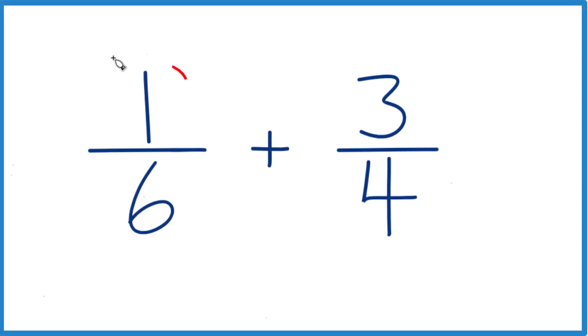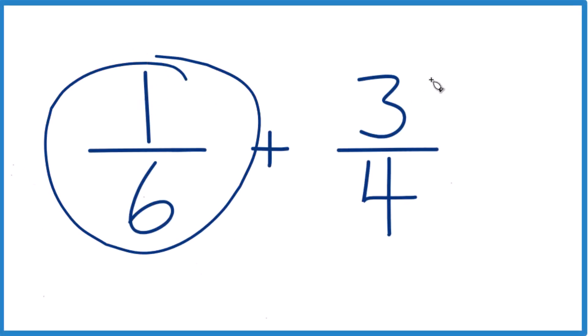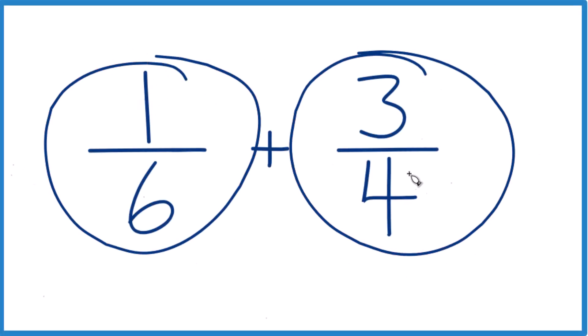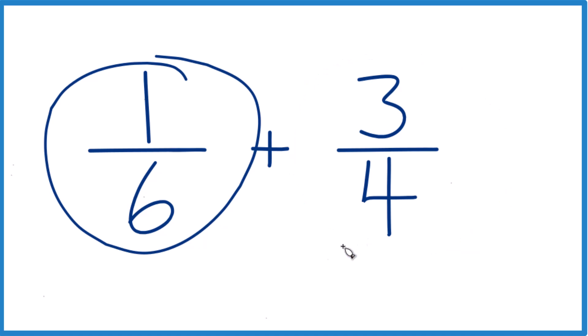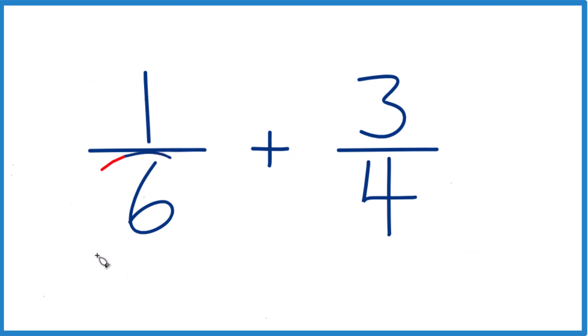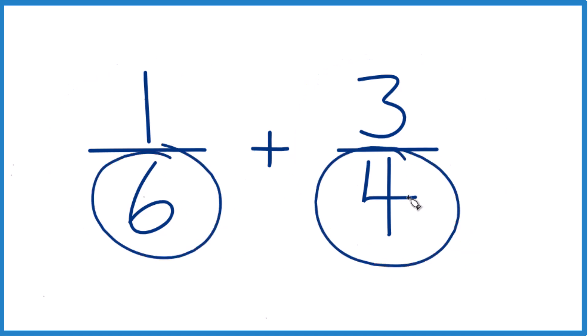If you need to add the fractions 1/6 plus 4/3rds, here's how you do it. What we want to do is get a common denominator. Right now we have 6 and 4. But if the denominators are the same, then we just add the numerators together, bring the denominator across, and we're done.